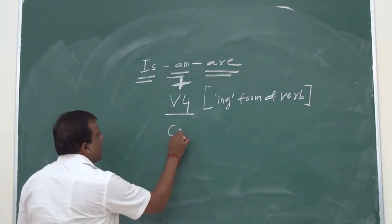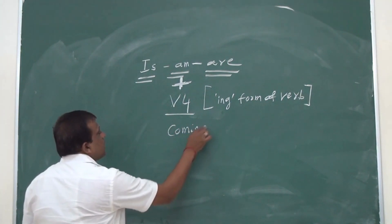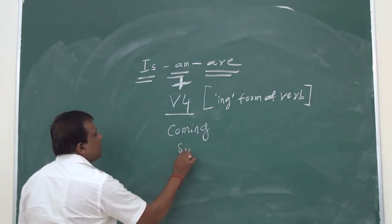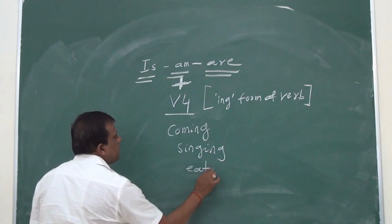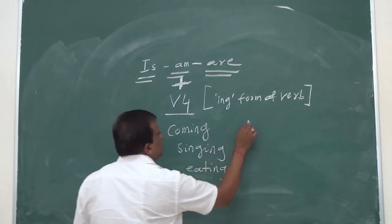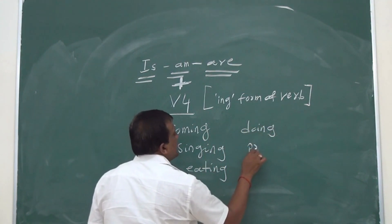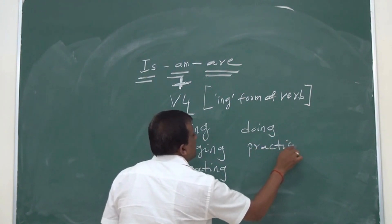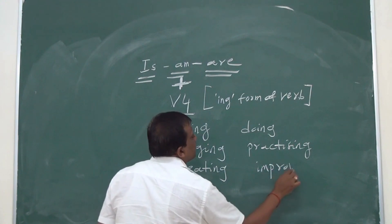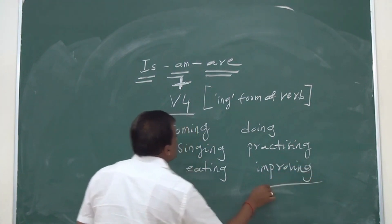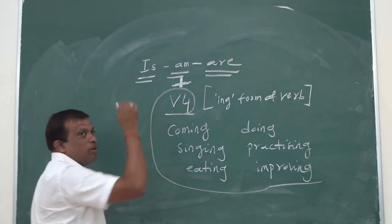For example, 'come' becomes 'coming,' 'sing' becomes 'singing,' 'eat' becomes 'eating,' 'do' becomes 'doing,' 'practice' becomes 'practicing,' 'improve' becomes 'improving.' So these 'ing' forms are called verb number four. And if you are using these verbs, you have to use any version of 'is,' 'am,' or 'are.'